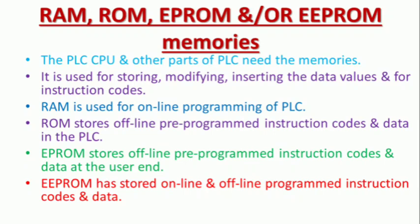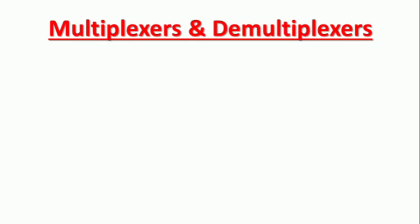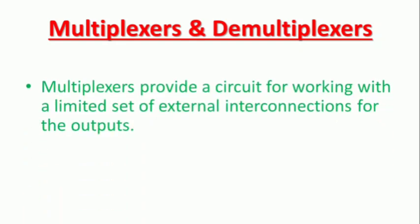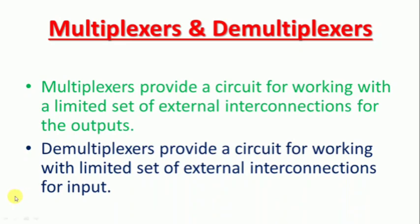It is actually UV-erasable — this is EEPROM. This is multiplexers and demultiplexers. The multiplexer provides a circuit for working with a limited set of interconnections for output. The demultiplexer provides a circuit for working with a limited set of interconnections for inputs.